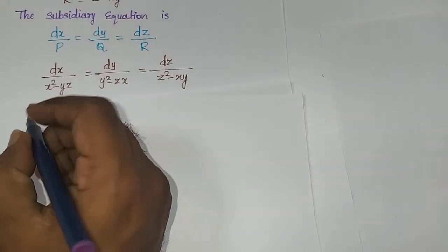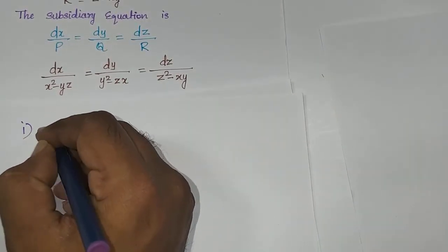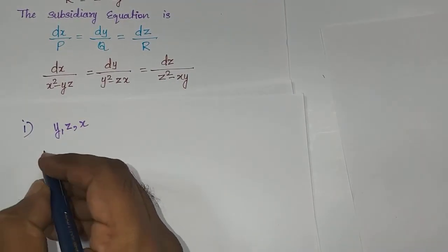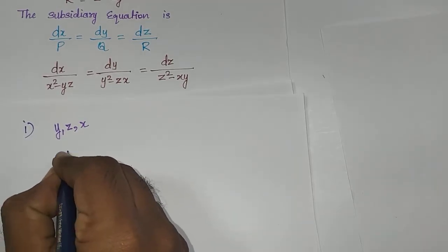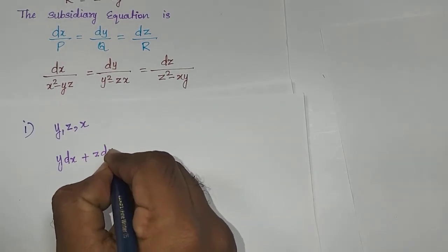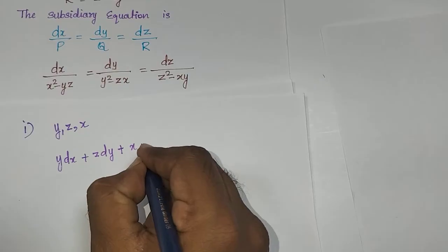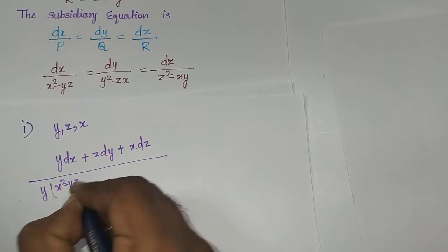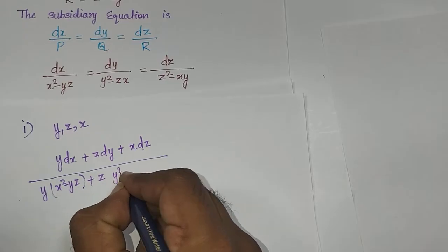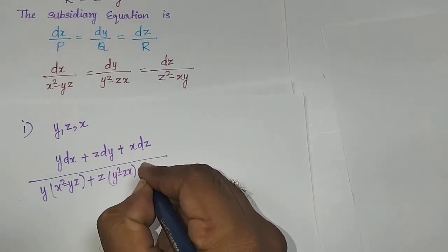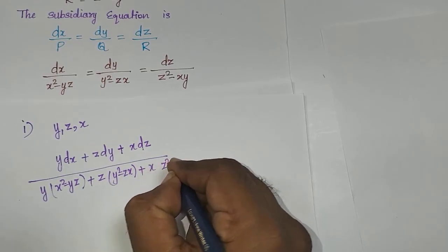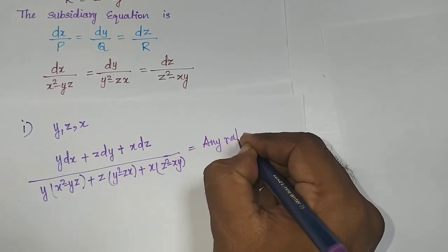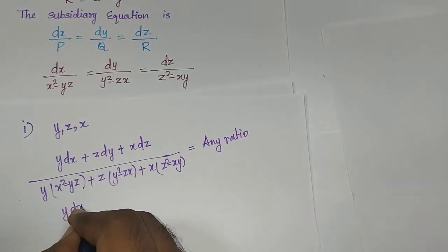Using the multiplier y, z, x, I am writing the numerator as: y·dx + z·dy + x·dz, divided by y(x² - yz) + z(y² - zx) + x(z² - xy), equal to any ratio.